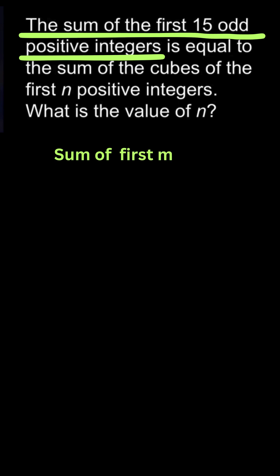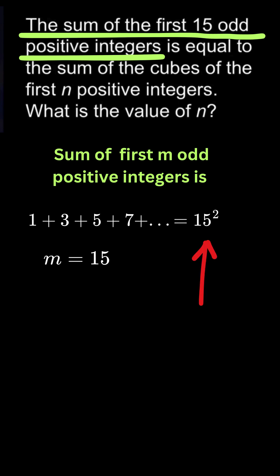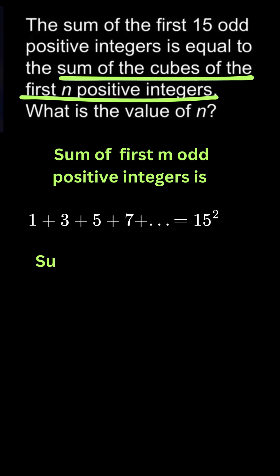The sum of the first m odd positive integers is 1 plus 3 plus 5 plus 7, and so on, and it is given by the formula m squared. We are given m is 15, so this will be 15 square.